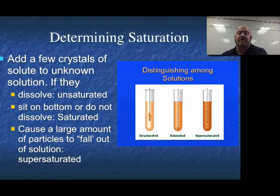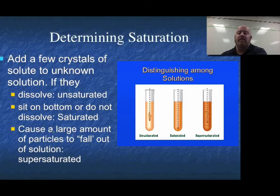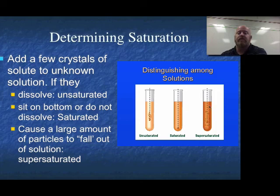To determine the saturation of a solution, simply add one extra crystal of your solute. One of three things will happen: if it dissolves, the solution was unsaturated; if it sits on the bottom and does nothing, it was saturated; and if it causes a large amount of other particles to fall out of solution, it was supersaturated. In all three cases, you can fix the effect — keep adding solute if unsaturated, filter out the extra crystal if saturated, or heat it back up and re-supersaturate if needed.